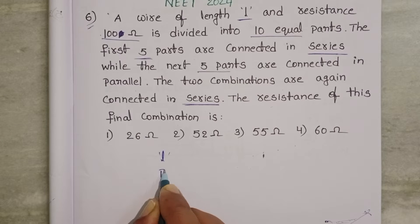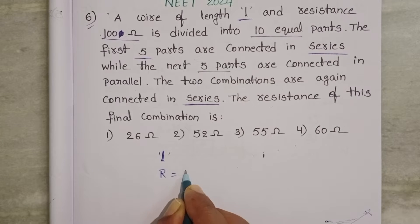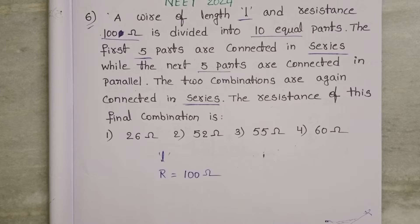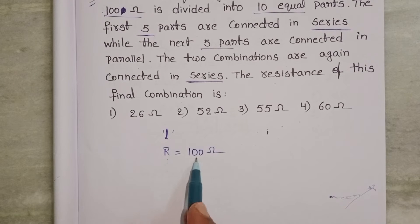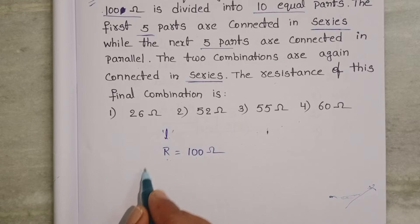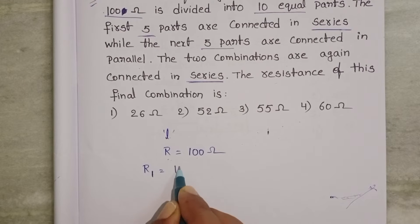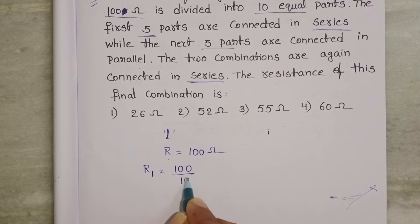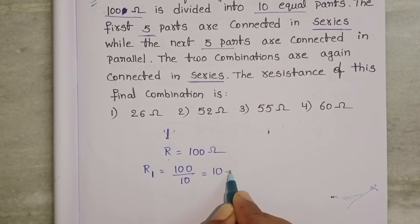Given wire of length L and resistance equals 100 ohm. Now this resistor of length L is divided into 10 equal parts. Each part has resistance of 100 by 10 equals 10 ohms.